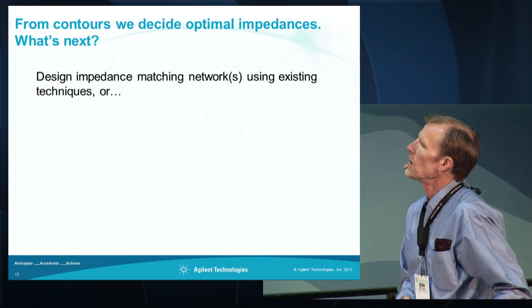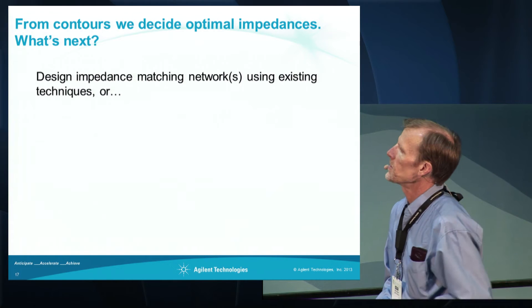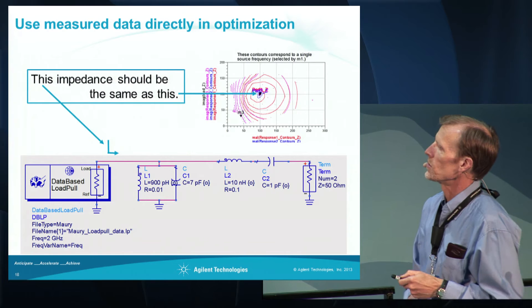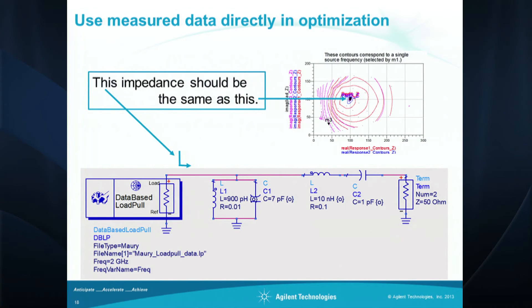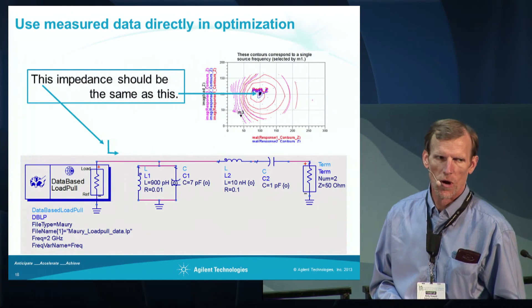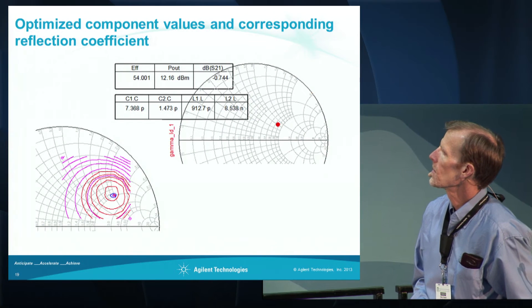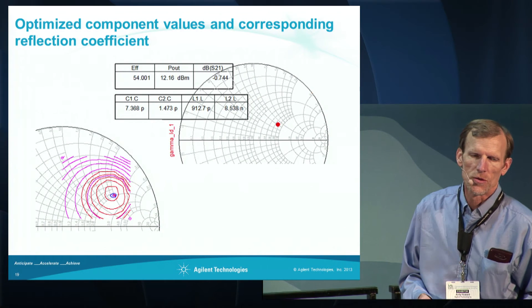Once we've examined the contours and decided what the optimal load impedances are, the next step would be to design impedance matching networks. You can use existing techniques, or you can actually use the measured data in an optimization. Here I'm showing a very simple impedance matching network, but we can optimize these component values across frequency and use data from the file — such as efficiency, gain, gain compression, power added efficiency, or distortion — as part of the optimization process. And this shows the results of the optimization. The results you get for your performance values will depend on how you define the goals in your optimization.